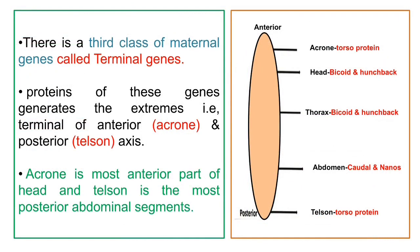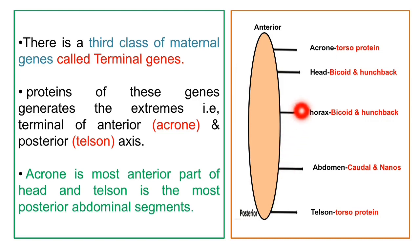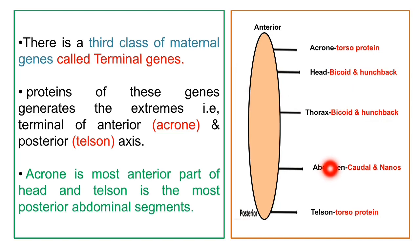Terminal genes are a third type of maternal genes. Proteins of these genes generate the extremes: the terminal of the anterior end, known as the acron, and the terminal of the posterior end, called the telson. The acron is the most anterior part of the head and the telson is the most posterior abdominal segment. Torso proteins are responsible for acron formation; bicoid and hunchback for head and thorax; and caudal and nanos for abdominal formation.